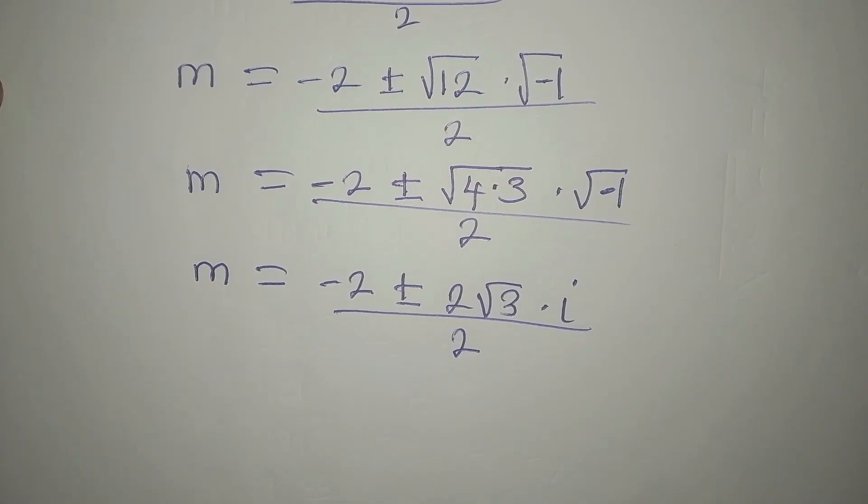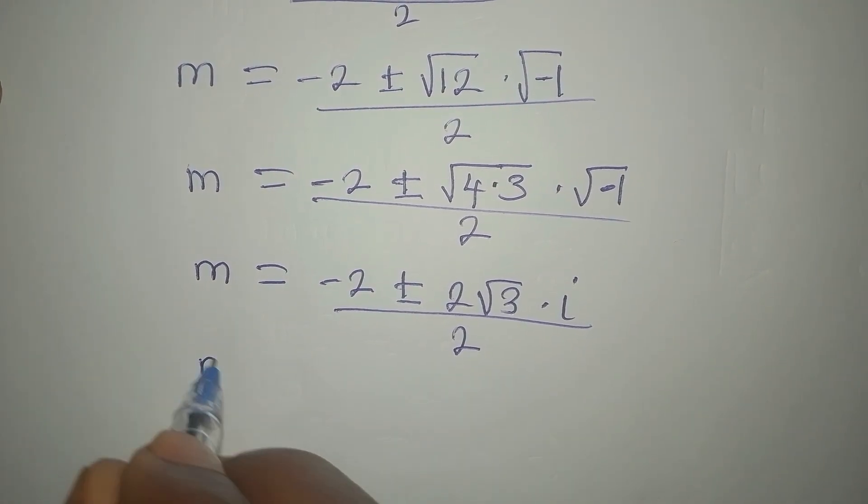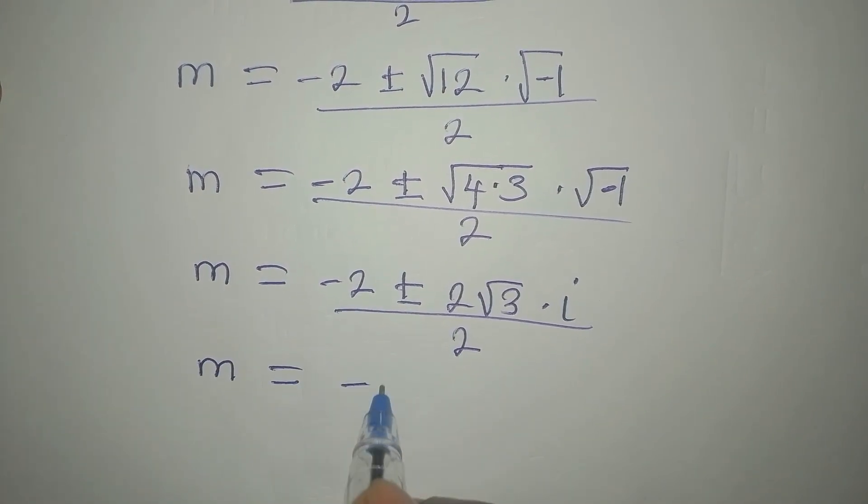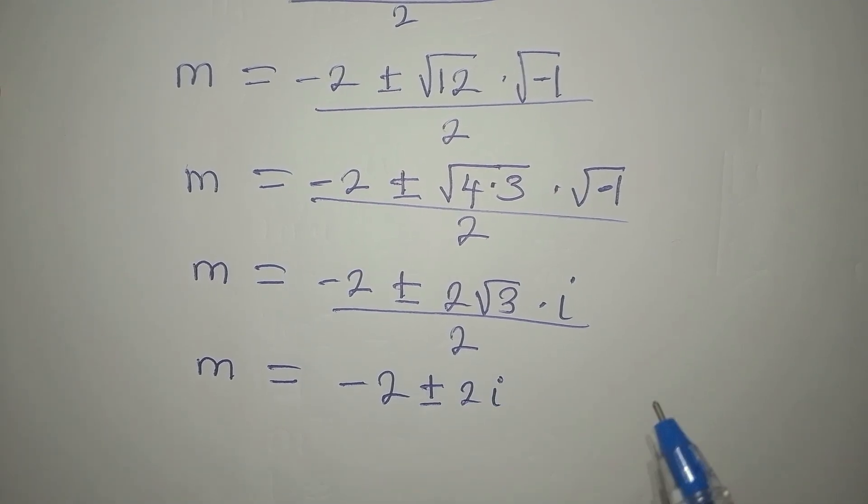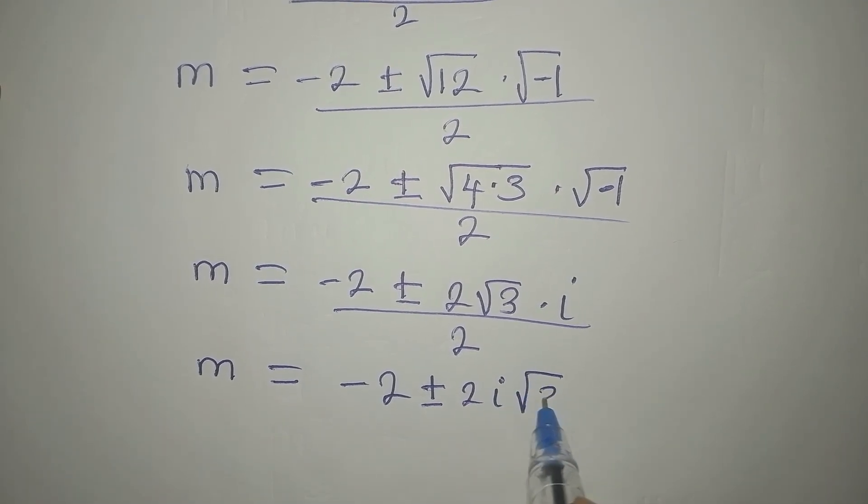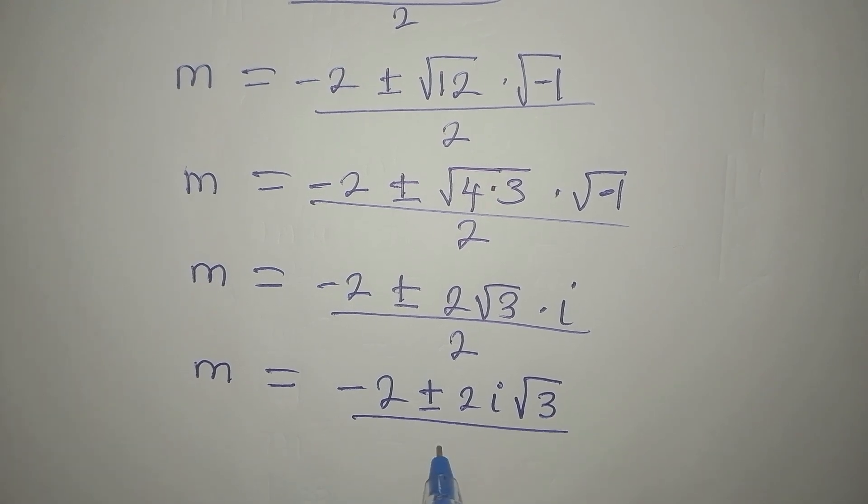Now, we can rearrange this so that m will be equal to minus 2, plus or minus, 2 times i is 2i, then times root 3. We divide all of this by 2.